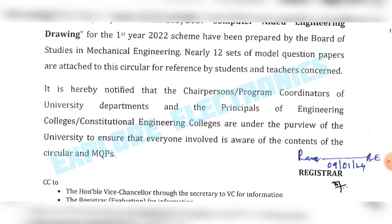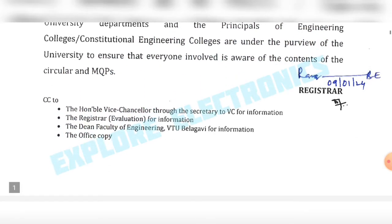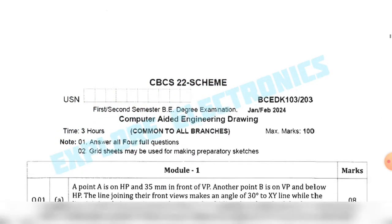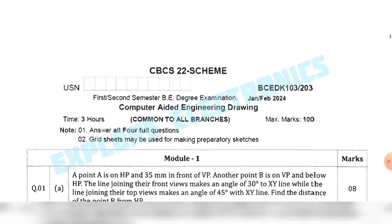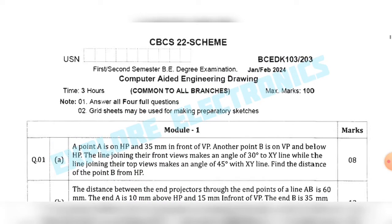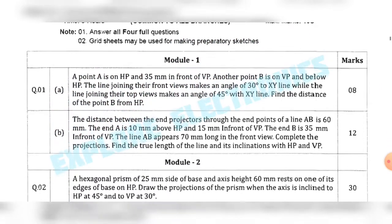This means students and also teachers who are going to teach this subject, or those who are going to set the question paper, can refer to this. It also gives students a reference for how the question paper will actually be. You can see the CBCS 2022 scheme — they have clearly mentioned Computer Aided Engineering Drawing BCEDK 103/203 for first and second semester.